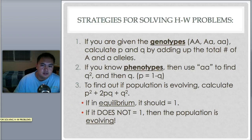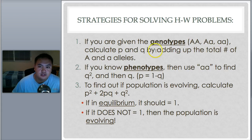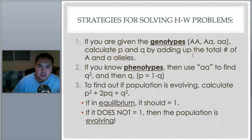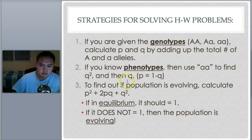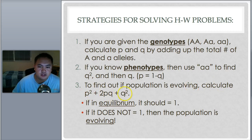Here are the strategies — something to circle in your notes. If you have genotypes (AA, Aa, aa), calculate p and q by adding up all the dominant A and recessive a alleles. If you know the phenotypes, use the recessive phenotype to find q², then find q, and then find p. To find out if a population is evolving, calculate p² + 2pq + q². If this equals 1, you're in equilibrium. If it does not equal 1, the population is evolving.